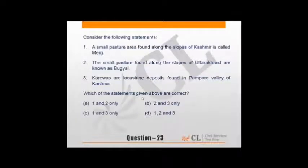Small pasture area found along slopes of Kashmir is called marg - the Gulmarg, the Sonmarg, these are areas which are small pasture areas. Small pasture found along slopes of Uttarakhand are known as Bugyal - again correct. Karewas are lacustrine deposits found in Kashmir Valley where saffron is also grown. One, two, three all stand correct from geography.